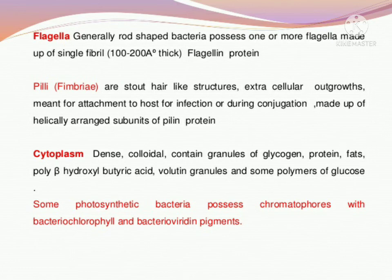The second extension or rod-like structure seen in bacterial cells is called pili or fimbriae. Pili and fimbriae are extra-cellular growths that play a role in attachment. We say pili when one bacterium is connected to another bacterium — the outgrowth joining two bacteria is called pili. And if a bacterium is attached to another organism like our body and causing infection, then fimbriae is present.